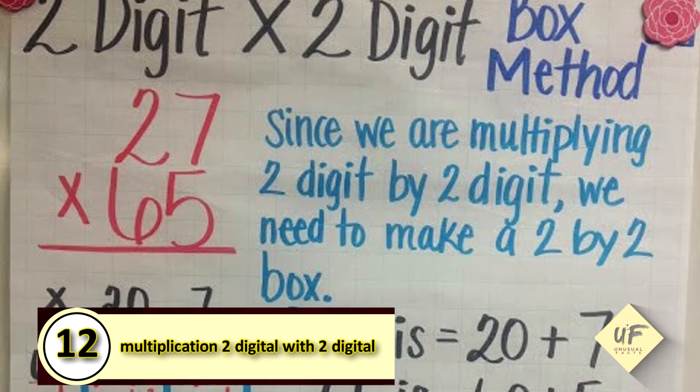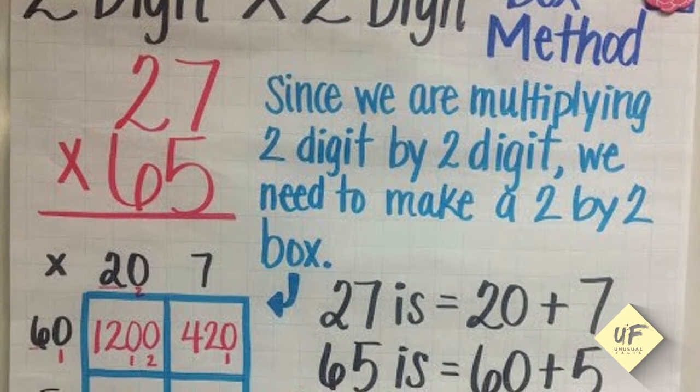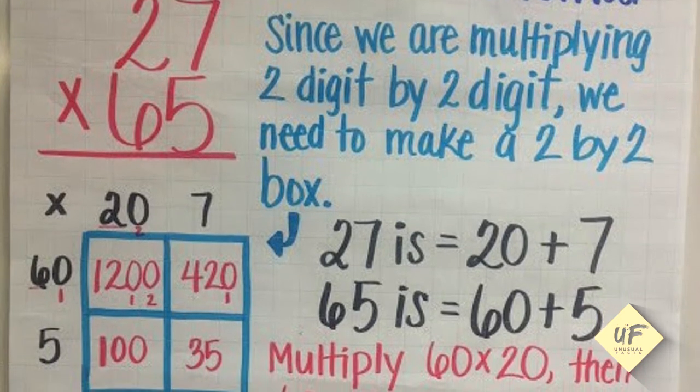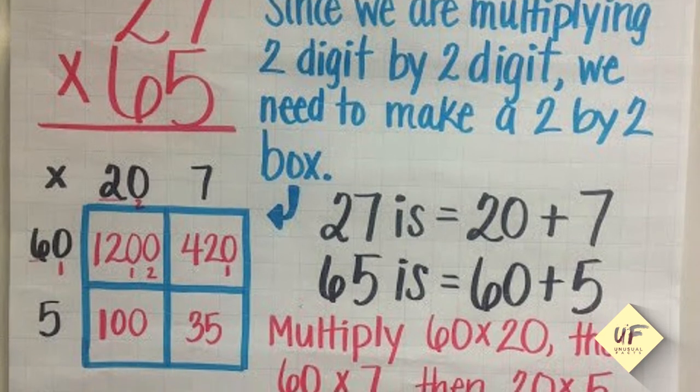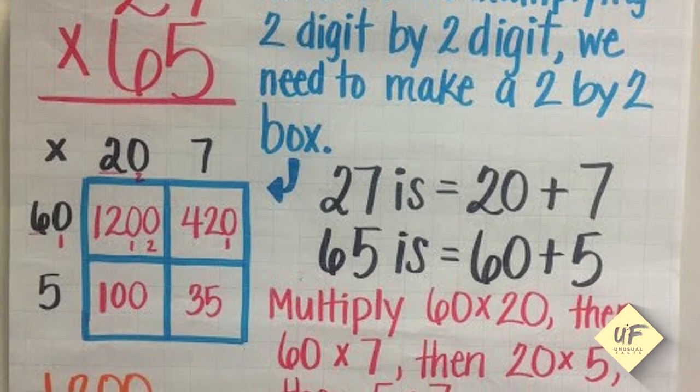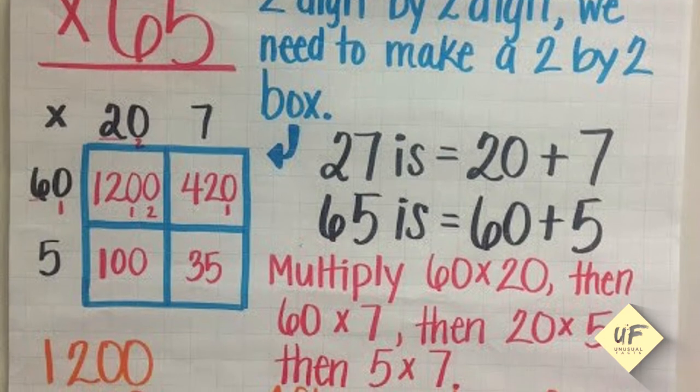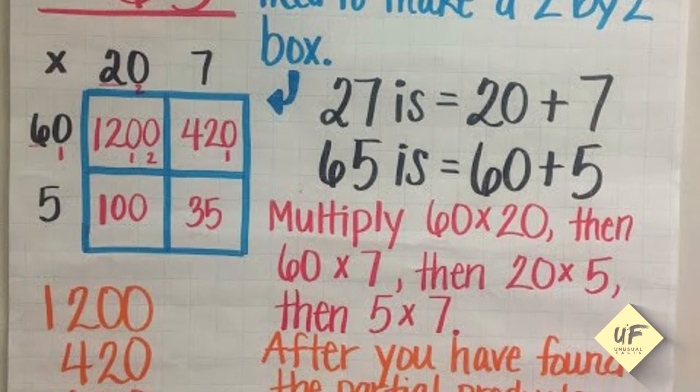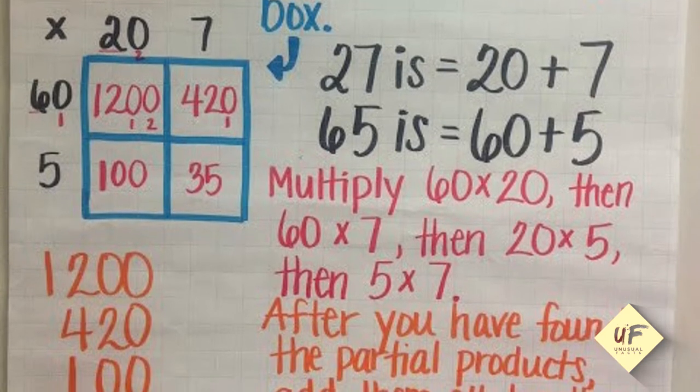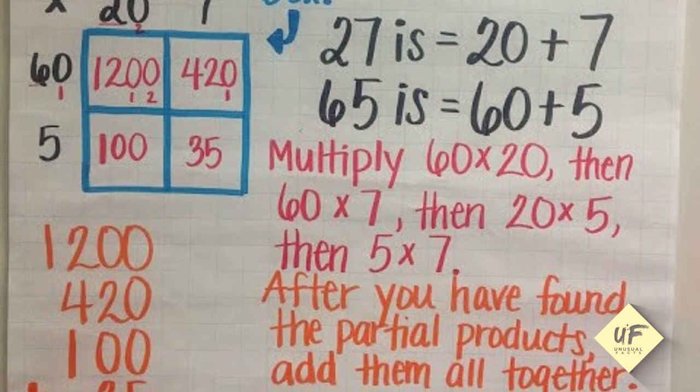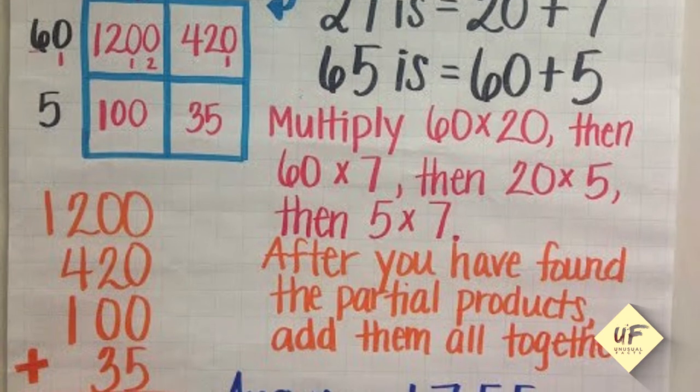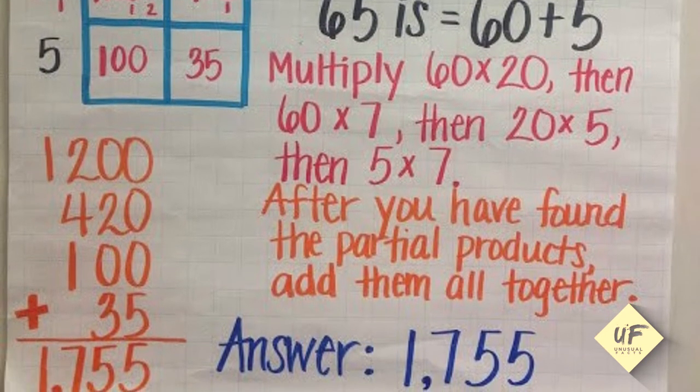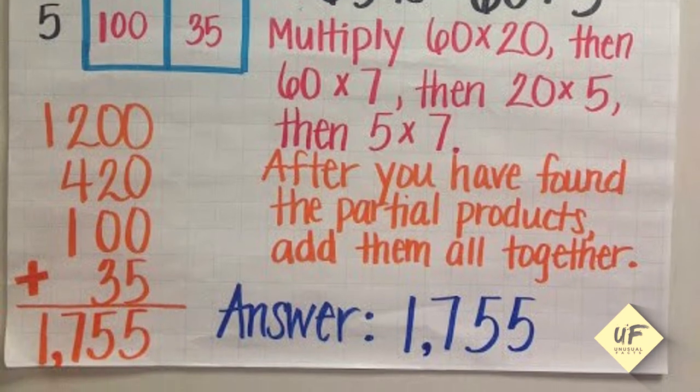Tip number 12: Multiplication, two digit by two digit. Here we'll use the box method. 27 times 65. Since we're multiplying two digits by two digits, we need to make a two by two box. So you break it down: 27 is 20 plus 7, and 65 is 60 plus 5. What you'll need to do next is multiply 60 times 20, then 60 times 7, then 20 times 5, and 5 times 7. When you add them all up, the answer is 1,755. An easy way to break it down and put it together.